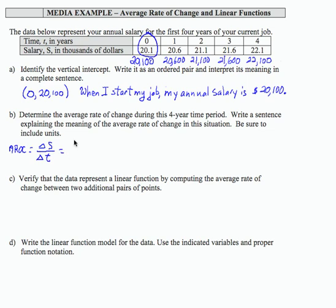So if I'm looking at the four year period, I'm comparing the last ordered pair with the first ordered pair and I'm computing the change in salary which is $22,100 minus my initial salary, $20,100 divided by my change in years which is four minus zero. In the numerator then, I have a difference of $2,000 divided by a difference in years of four and that's $500 as a division. The units are dollars per year, very important.